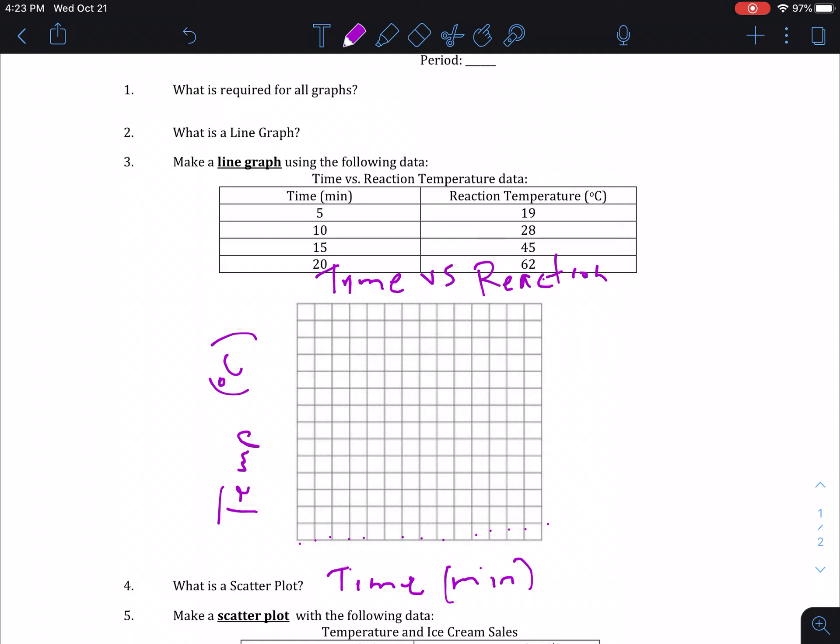I already put the labels, the title time versus reaction, and then your horizontal label is your time in minutes and your vertical label is your temperature in degrees Celsius. What we have to do is figure out what our scale is going to be for this and it needs to be consistent numbers or consistent intervals with your scale.